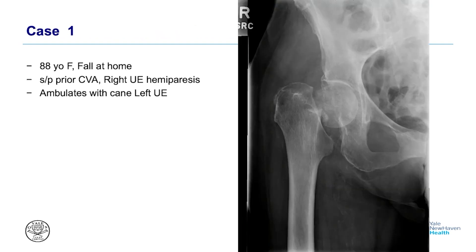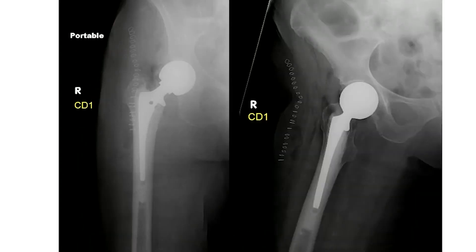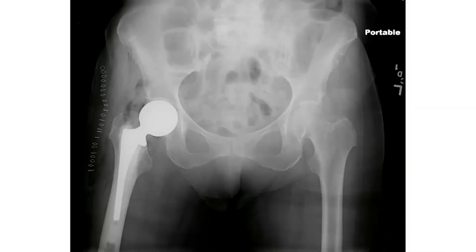Case one: an 88-year-old who fell, very osteoporotic femur, had a stroke in the past, ambulates with a cane at baseline. You can easily template here with a ball in the film against the left hip — that's what I would recommend. You can see a collared cemented stem, a very nice mantle, a standard construct, and nice leg length restoration on the pelvis post-op film.